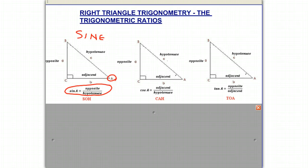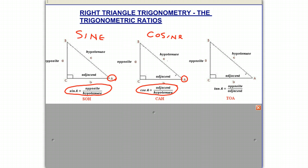The next ratio is cosine. The cosine of A is the adjacent side over the hypotenuse. Cosine is spelled C-O-S-I-N-E, though the abbreviation is C-O-S. And finally, the tangent ratio is the opposite side over the adjacent side, abbreviated T-A-N for tan.